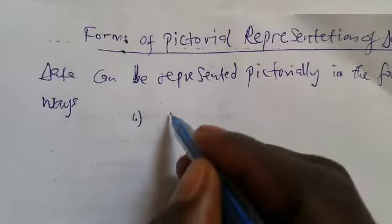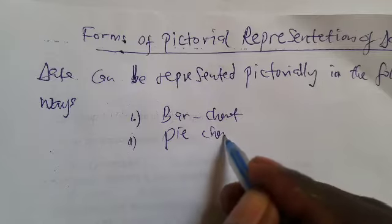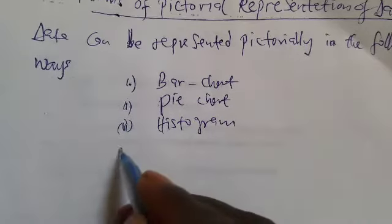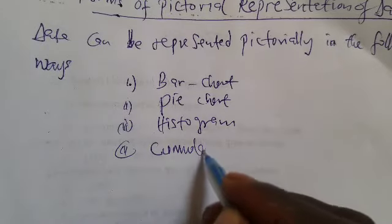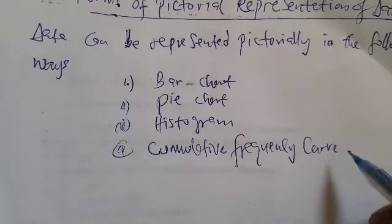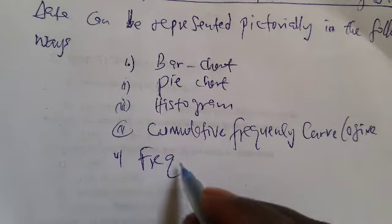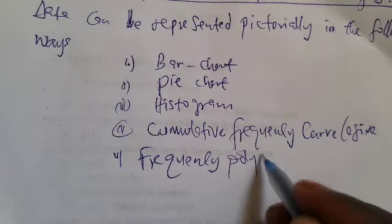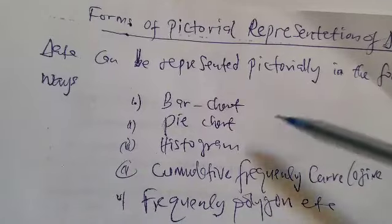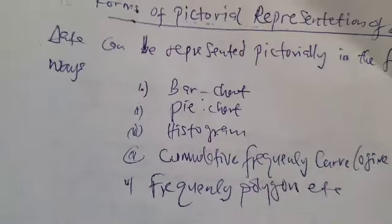Data can be represented in a bar chart, pie chart, histogram, cumulative frequency curve, or frequency polygons, etc. These are the forms of pictorial representation of data.